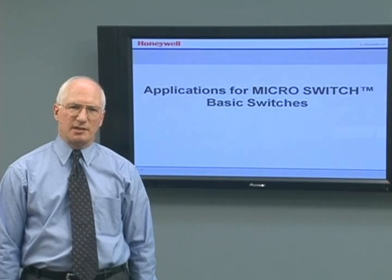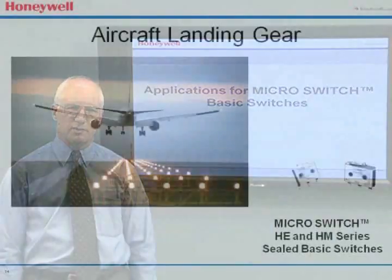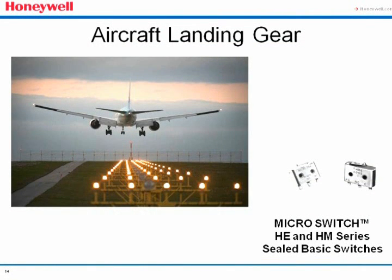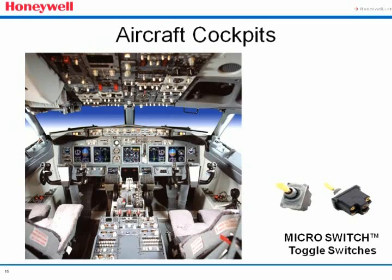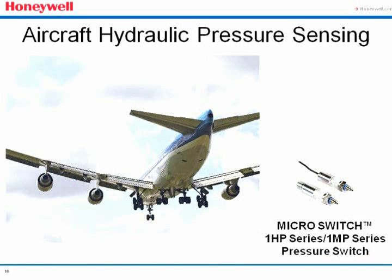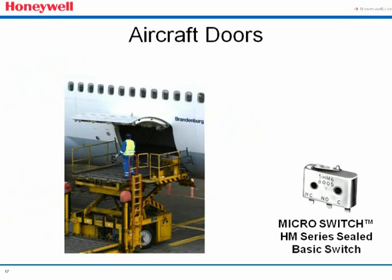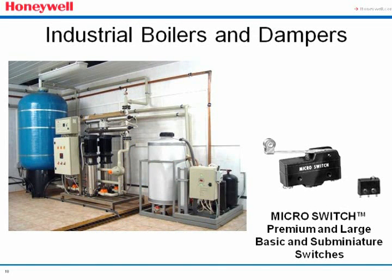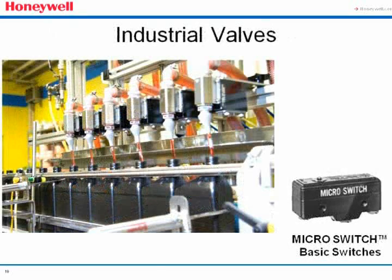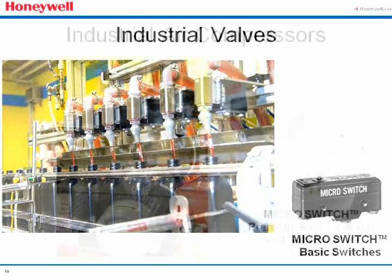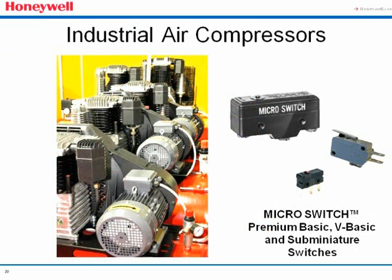Some specific aerospace and industrial applications using Honeywell microswitch technology: in commercial aircraft, our HE and HM sealed switches are frequently used to indicate if the landing gear is up or down. Toggle switches are found in cockpits worldwide. Honeywell's newest 1HP and 1MP series pressure switches are frequently used for hydraulic pressure sensing. The HM series sealed basic switch is used to indicate that aircraft doors are closed. Industrial applications include boiler and damper control in HVAC systems using our large basic and sub-miniature premium switches, valve position detection in oil and gas refineries, waste treatment plants, and other factories using our basic switches, and pressure release valves and air compressors using our premium basic switches.